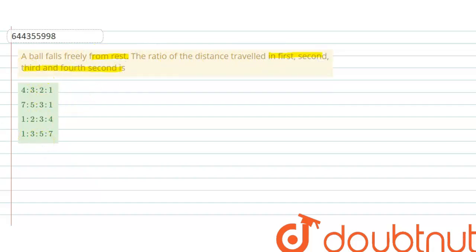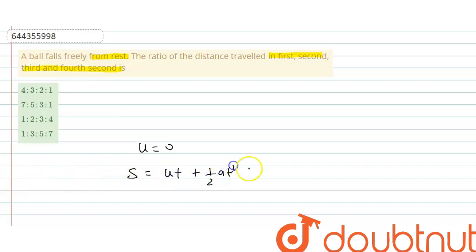So the ball is falling freely from rest, so the initial velocity of the ball is 0. According to the distance formula, distance travelled by a body in t seconds is S = ut + ½at². Since this is free fall, acceleration is due to gravity, so we use S = ½g·t².